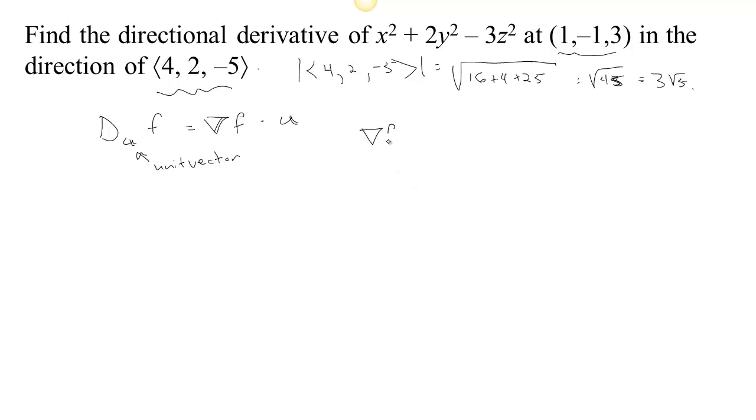Our gradient is, the first component is the derivative with respect to x which is 2x. The second component is the derivative with respect to y which is 4y. And the third component is the derivative with respect to z which is negative 6z. So at our particular location, x is 1 and y is negative 1 and z is 3. So at this particular location, the gradient is 2 times 1 would be 2, 4 times negative 1 would be negative 4, and negative 6 times 3 would be negative 18.